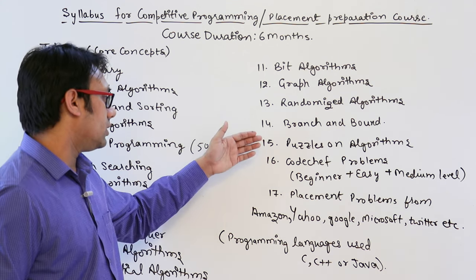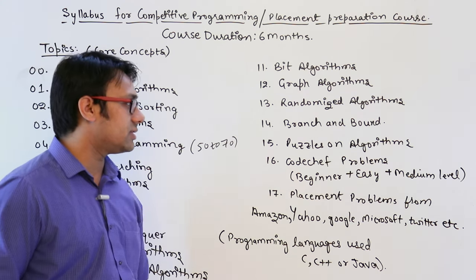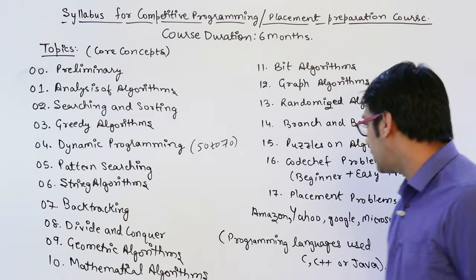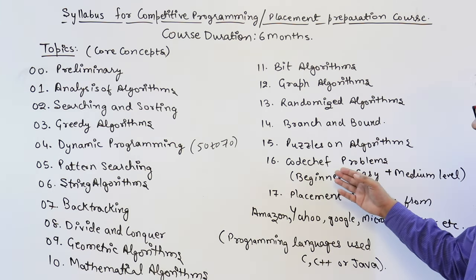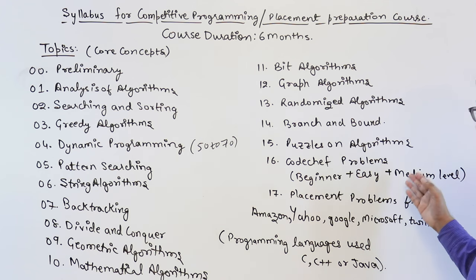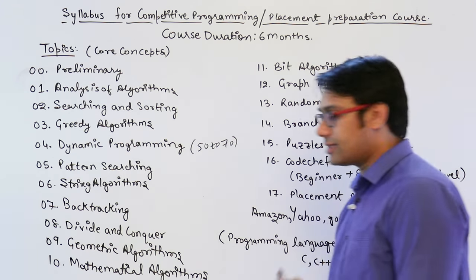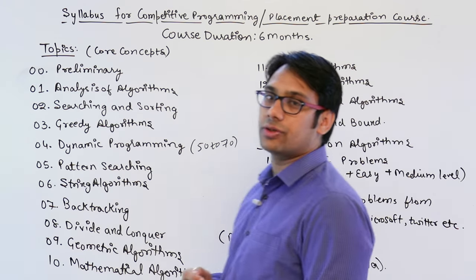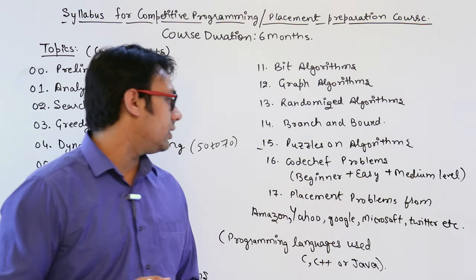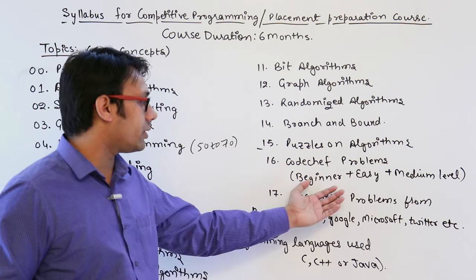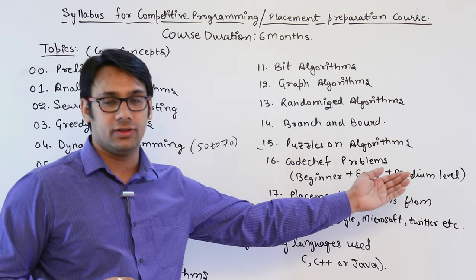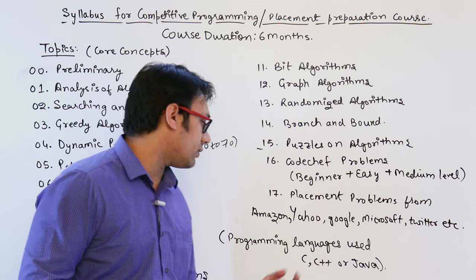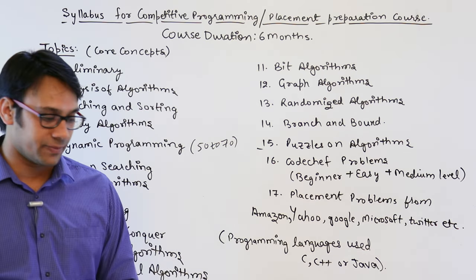Then we will have puzzles on algorithms — some standard puzzles — and then we will take problems from CodeChef at beginner, easy, and advanced levels. By that point, you should be able to solve most beginner-level problems, and we will also take easy, medium, and some difficult problems, along with placement problems from Amazon, Yahoo, Google, and others.